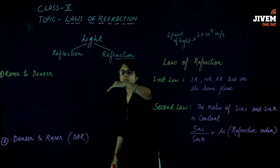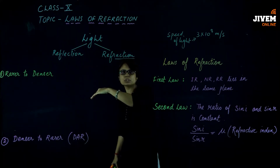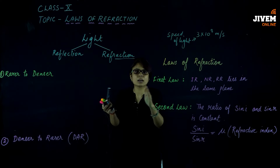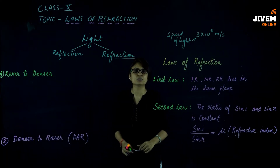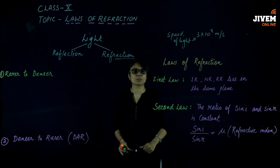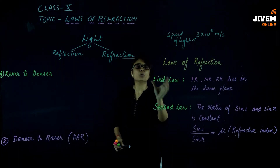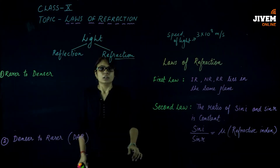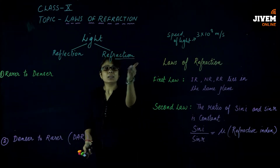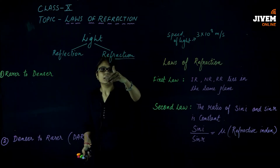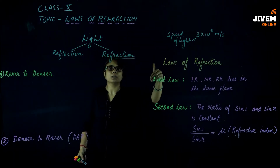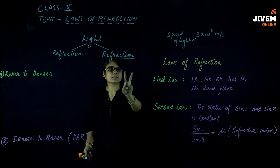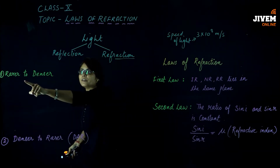When light travels in a vacuum medium and suddenly its track changes — that is, when it goes from one medium to another medium — it deviates from its path on its own, meaning it changes its path. That is called refraction. Now, how does this happen when light moves from one medium to another?